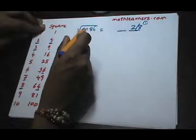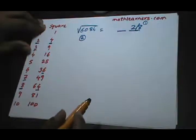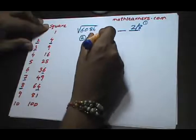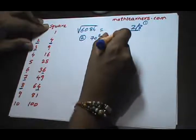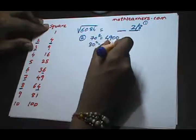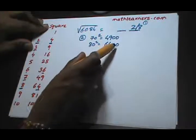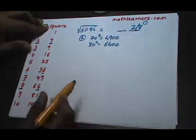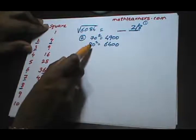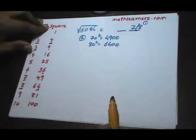The second step is to find which perfect squares 6084 lies between. We know that 70 squared is 4900 and 80 squared is 6400, so the square root of 6084 will be between 70 and 80.